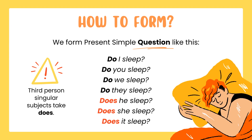When we form the present simple question, the third person singular subject takes 'does.' We don't say 'does she sleeps' — because you already have 'does,' the verb should be in its base form. The correct form is: 'Does she sleep?'